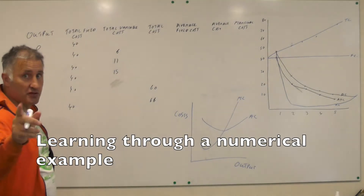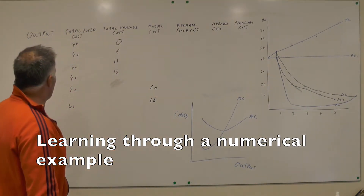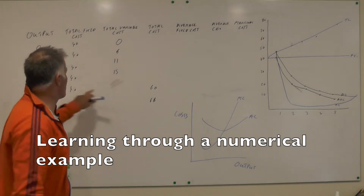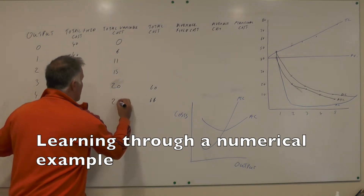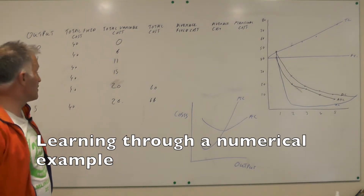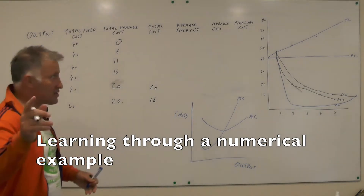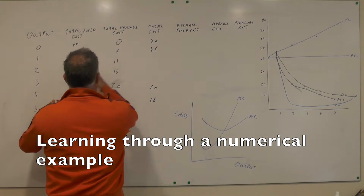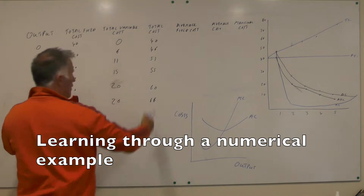Then we've got the total variable cost. The variable cost will be 0 at output 0. We can work out these two points because they've given us the total cost curve. So 60 minus 40 gives a total variable cost of 20, and 66 minus 40 gives a total variable cost of 26. Now I've got the total cost line, which is fixed cost plus total variable cost: 40 plus 0 is 40; 40 plus 6 is 46; 40 plus 11 is 51; and 40 plus 15 is 55. So now we've got a total cost curve.